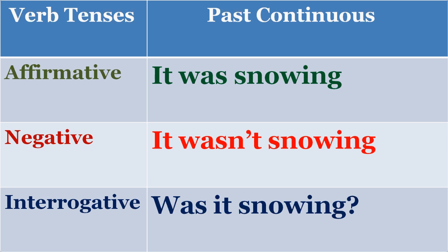Past continuous means something happened already and was continuously happening. Affirmative: 'It was snowing' or 'It was raining.' Negative: 'It wasn't snowing' or 'It wasn't raining.' Interrogative: 'Was it raining yesterday?' or 'Was it snowing the day before yesterday?' Affirmative, negative, interrogative — mostly we come across only these kinds of sentences in our day-to-day life.